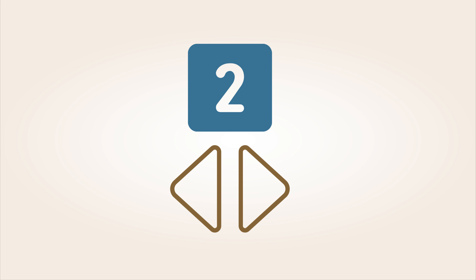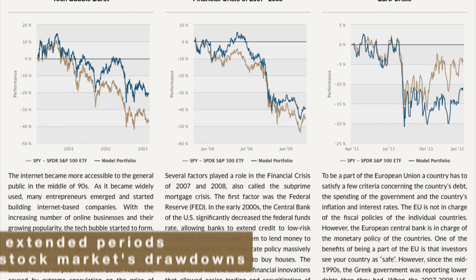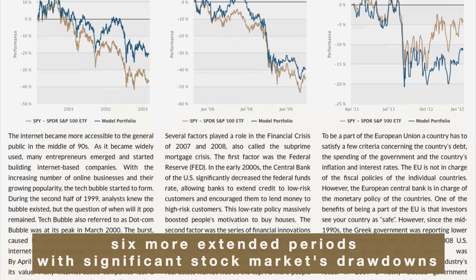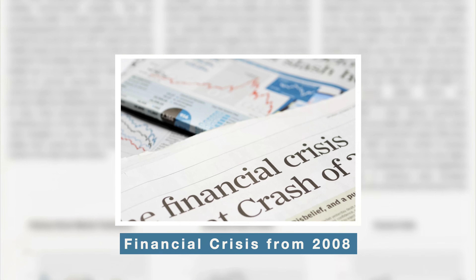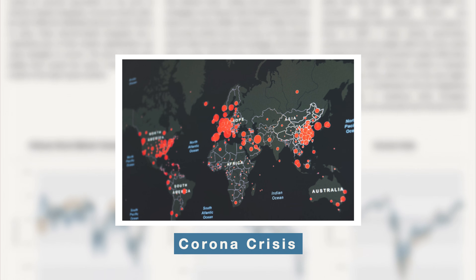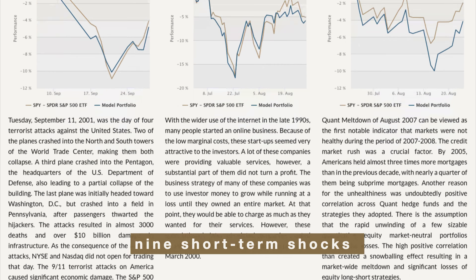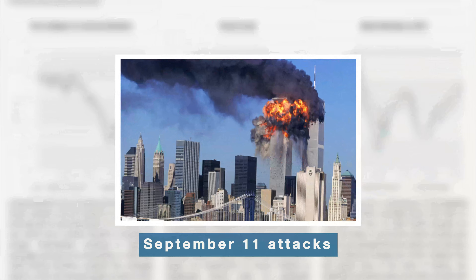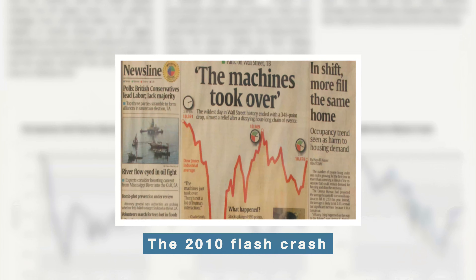We split this report into two sections. The first one contains six more extended periods with significant stock market drawdowns, for example, the financial crisis from 2008 or the corona crisis. The second section includes nine short-term shocks like the September 11th attacks, the 2010 flash crash, and others.